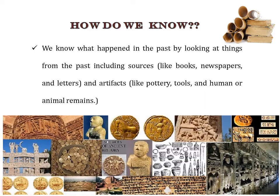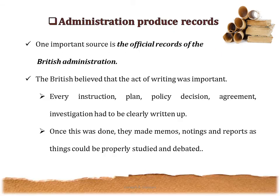How do we know about all this? We know what happened in the past by looking at things from the past, including sources like books, newspapers, letters, artifacts like pottery and tools, and human and animal remains. Let's see how we are able to know about the British rule in India.